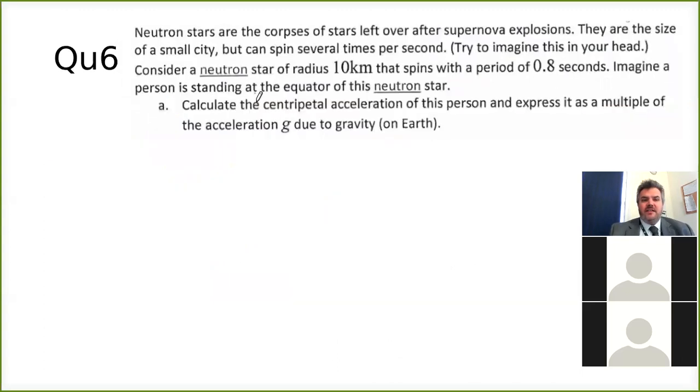So next question, question six is another difficult question. There's a lot of weirdness here, a lot of stuff here that you might not have heard of before. But don't worry, when you pick out the bits that are important, it becomes easy. So we've got neutron stars. They're the corpses of stars left over from supernova explosions. They're the size of a small city, but they spin several times per second. So you consider a neutron star with a radius of 10 kilometers. So that's my radius. Remember, I've got to multiply it by a thousand to get it in meters. And I've got a period of 0.8 seconds. I have to imagine a person standing on the equator of this neutron star.